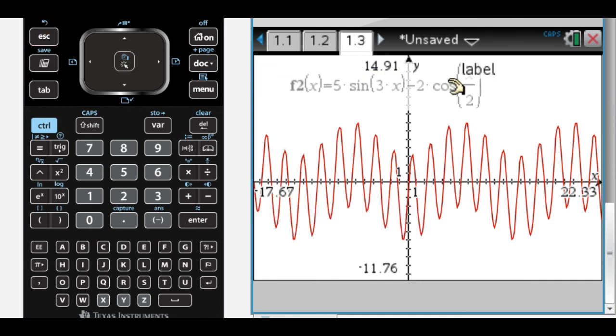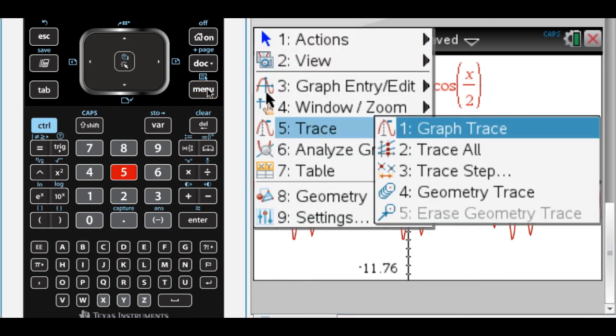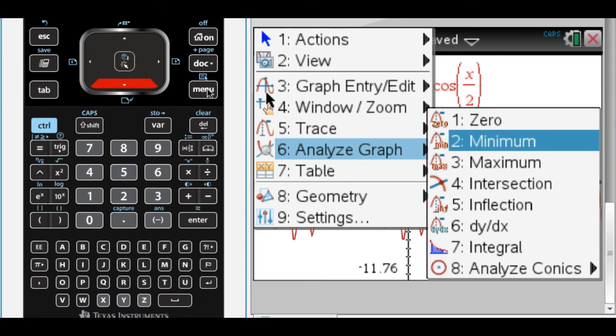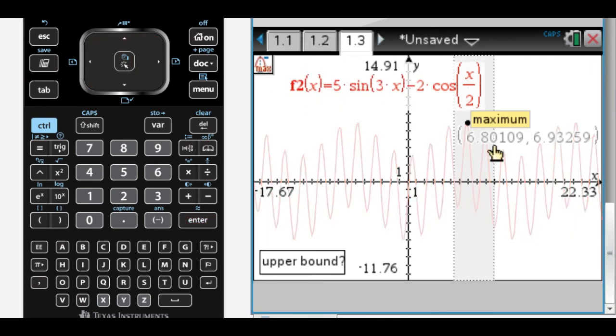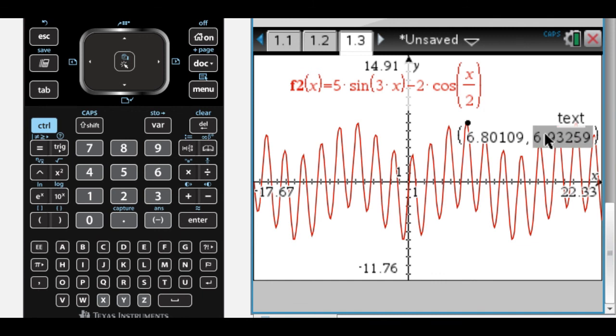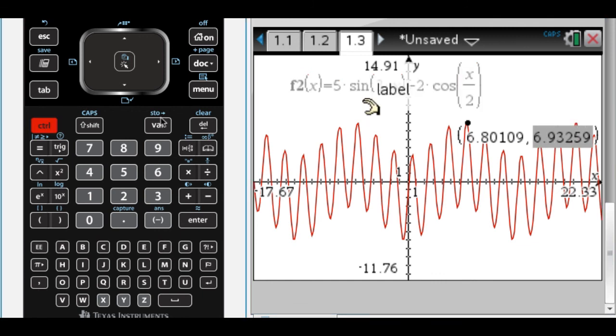So I want to find the maximum. Find the maximum and store it there. So click that. I'm going to store that as maximum 2.